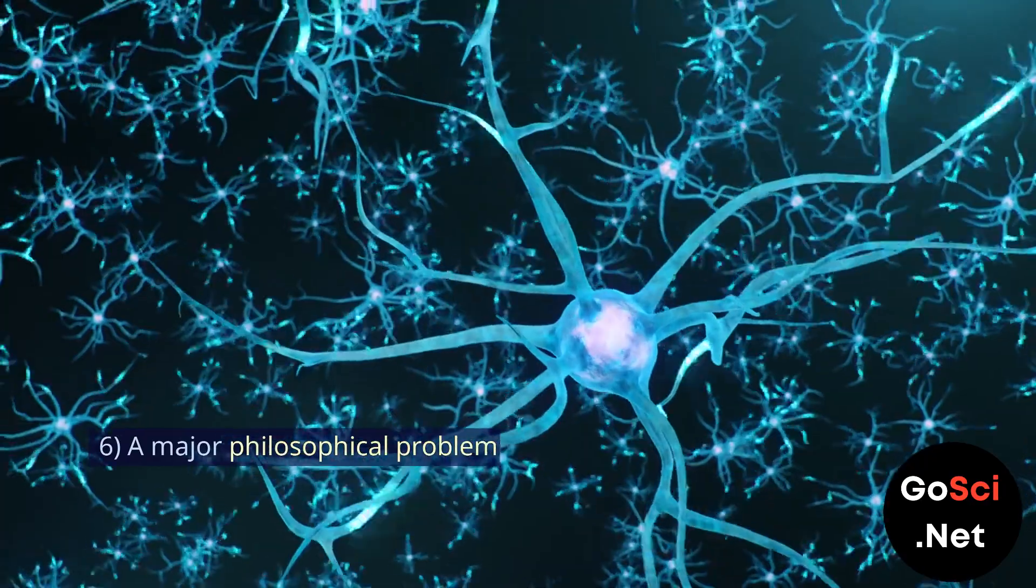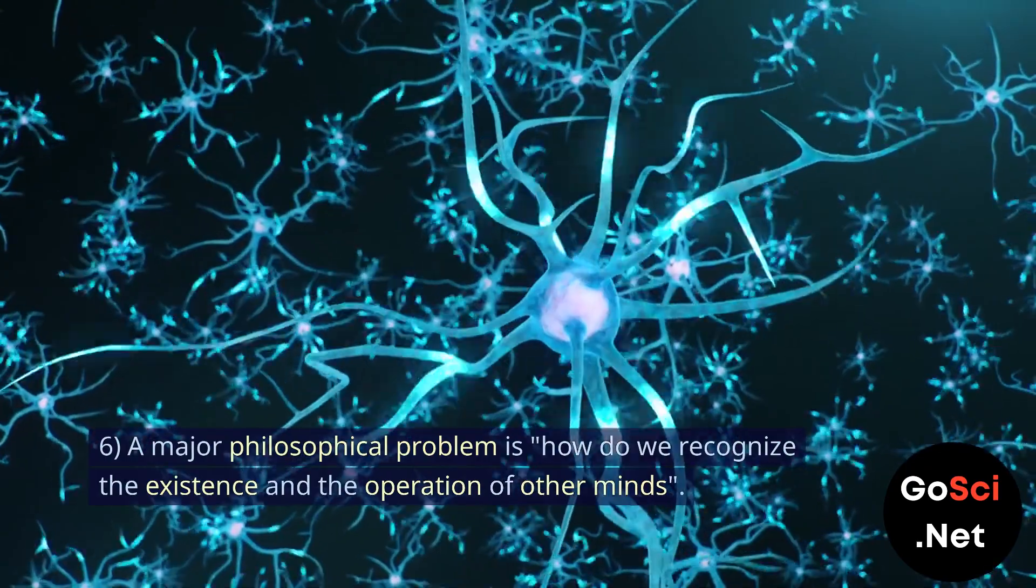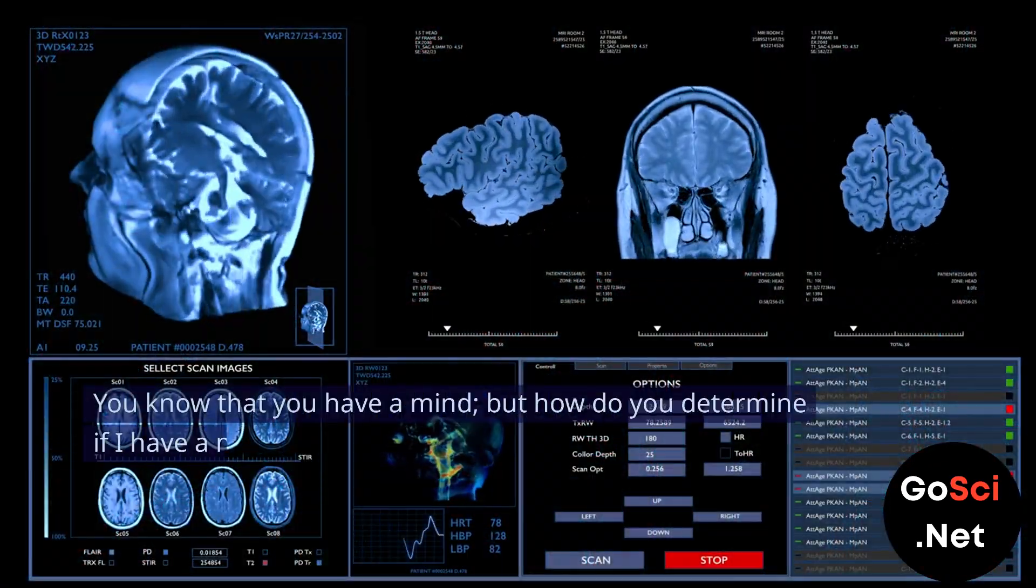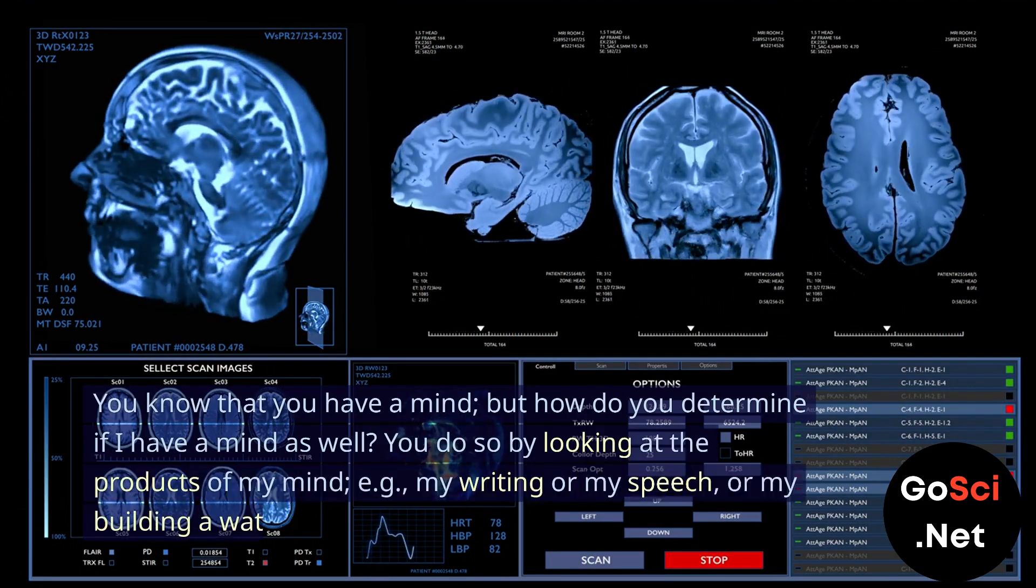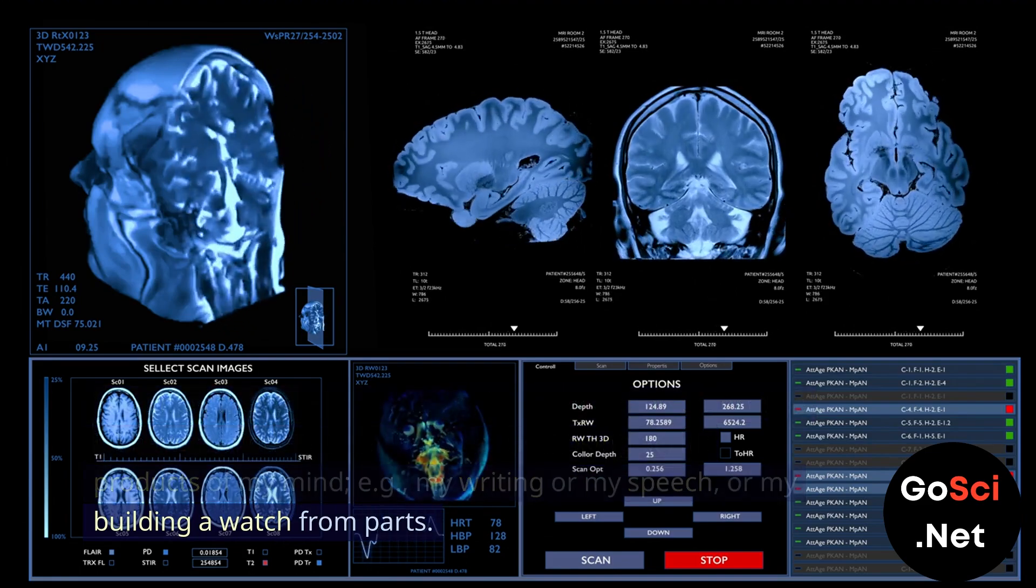Sixth, a major philosophical problem is, how do we recognize the existence and the operation of other minds? You know that you have a mind, but how do you determine if I have a mind as well? You do so by looking at the products of my mind, for example, my writing or my speech, or my building a watch from parts.